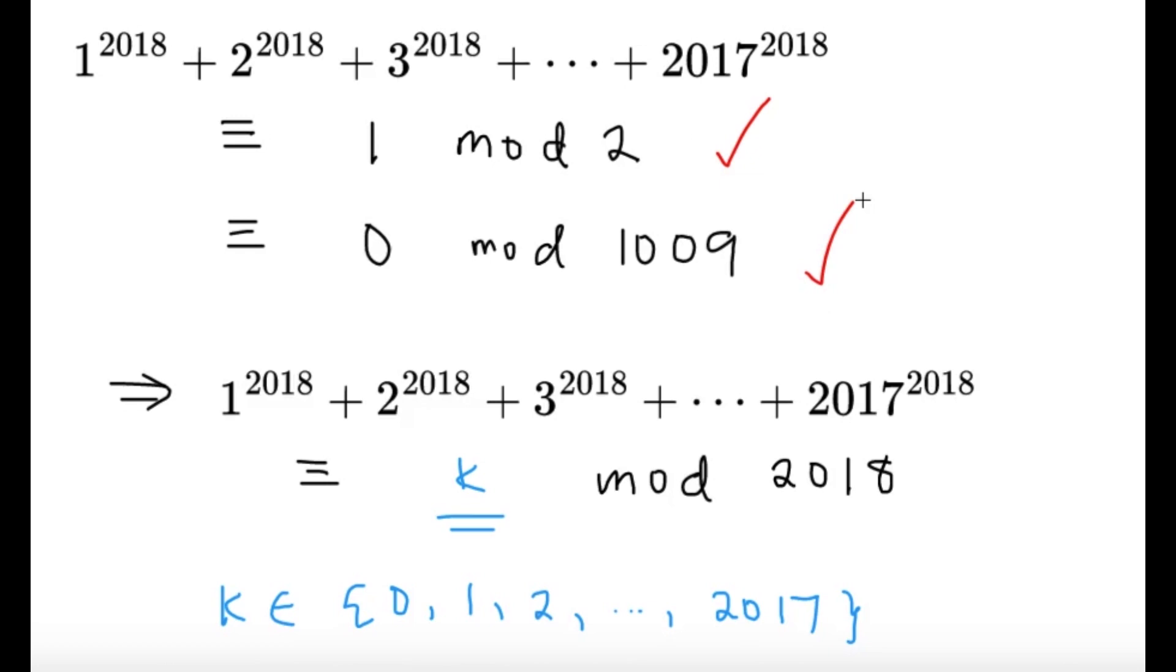We can finally get this sum under mod 2018. The Chinese remainder theorem states that there is only one value of k in the set 0, 1, 2 until 2017. So there's only one number here that's going to be this sum under mod 2018. And whatever this value of k is, it must satisfy 1 mod 2 and 0 mod 1009. So it must satisfy both of these smaller congruences that we got.